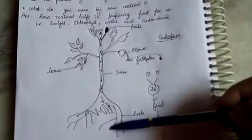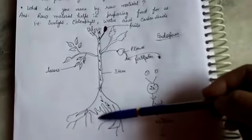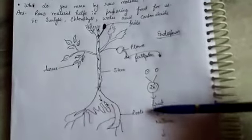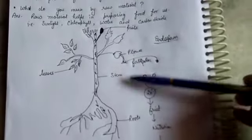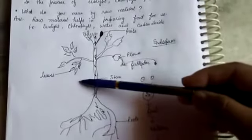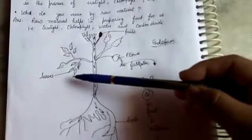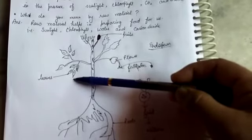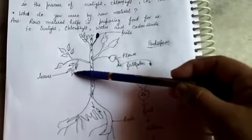Now we go to the structure of the plant. When we see the plant, we see roots, stem, flowers, fruit, and leaves. But the main source of the plant is the leaf because we all know that leaves is the kitchen of the plant.